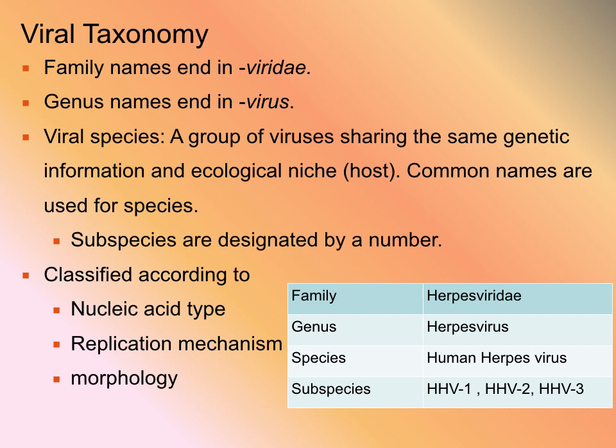In viral taxonomy we have to classify different viruses, families of viruses. Family names always end in 'viridae,' genus names always end in 'virus,' and a viral species will be determined by the host species that it infects or invades, as well as genetic similarities.